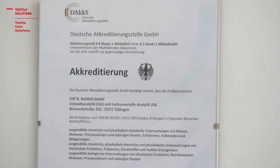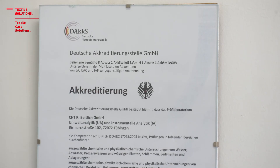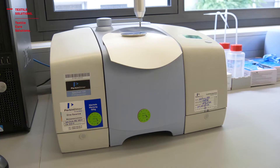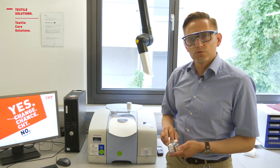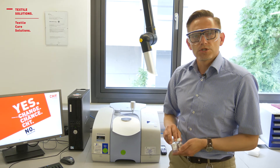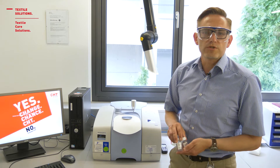Die IR-Spektroskopie ist ein leistungsfähiges Verfahren, bei der mittels Wärmestrahlung Funktionalitäten in Molekülen aufgeklärt werden können. Diese beiden Proben – die bestrahlte und die unbestrahlte – werden mittels IR-Spektroskopie untersucht, und wir können anhand von Absorptionsbanden Unterschiede in der Zusammensetzung der beiden Proben feststellen.